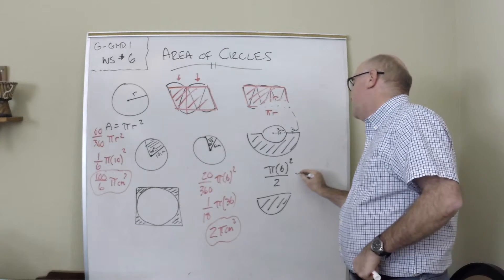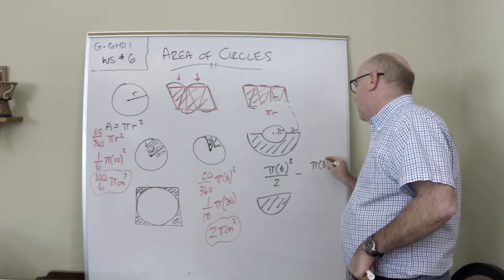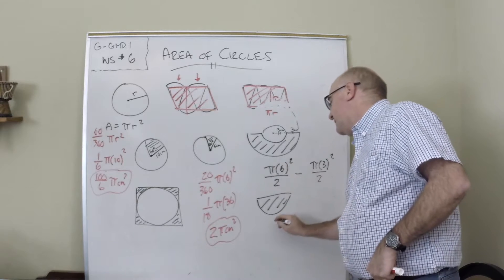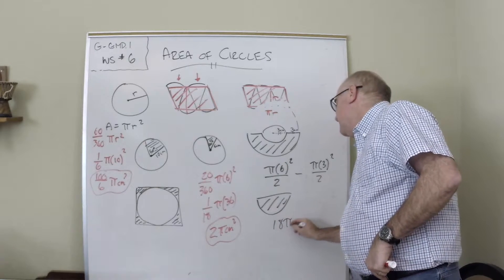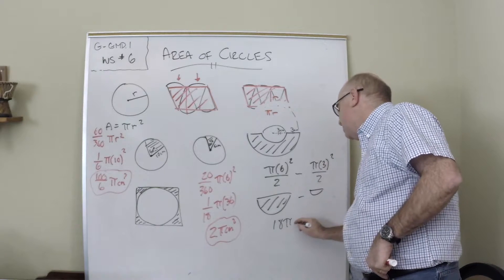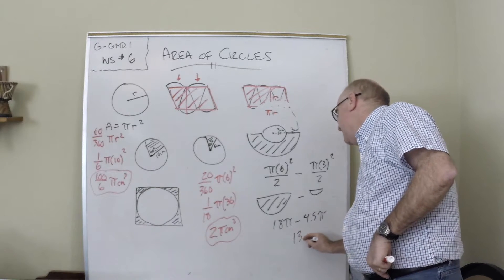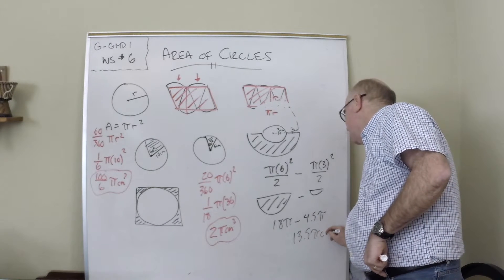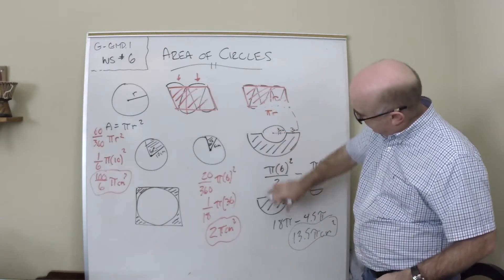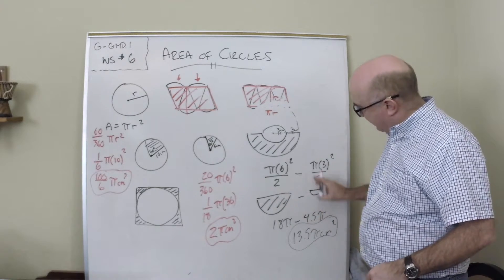Now what that would give you is the area of the half of this bottom half right here, the whole thing. And then we would need to subtract out the little guy in here, which is pi r squared divided by 2. And so we get 36/2 pi minus this little guy here, which is 9 divided by 2, which is 4.5 pi. So we get 13.5 pi centimeters squared.